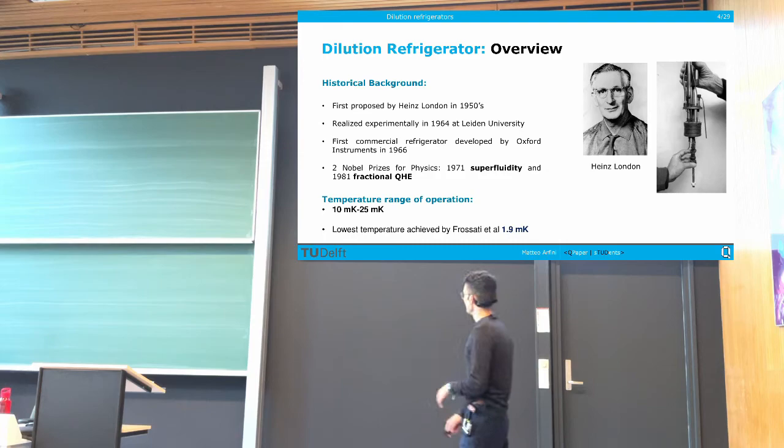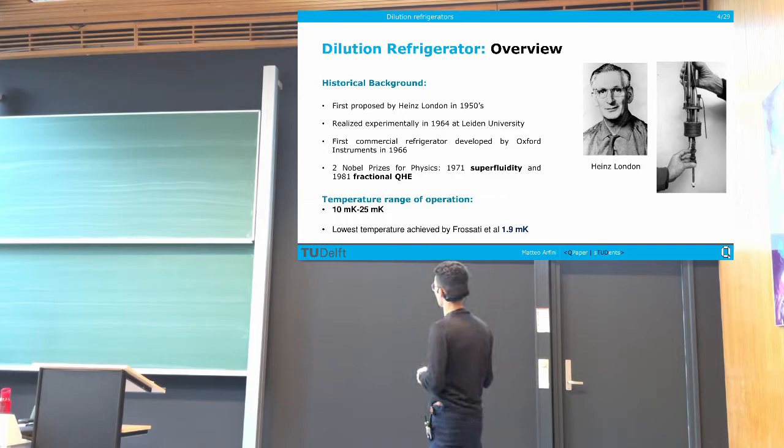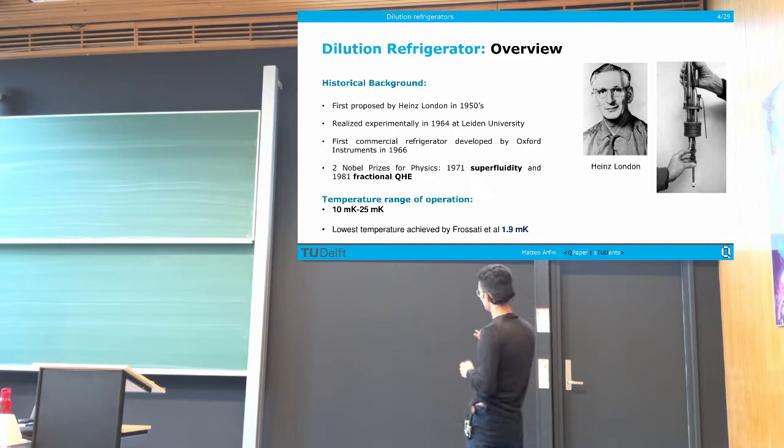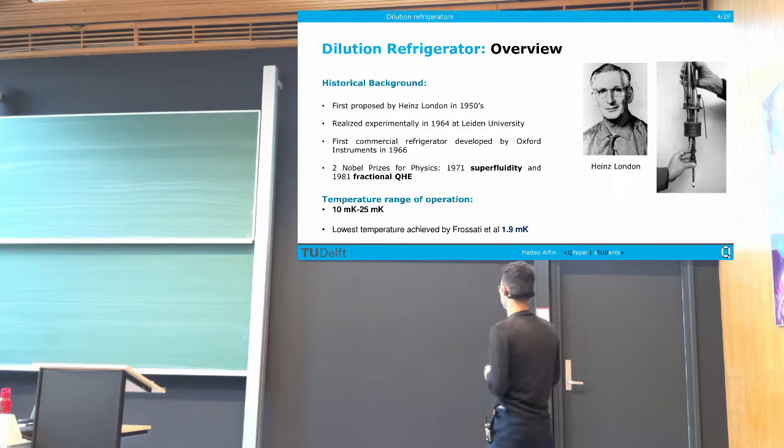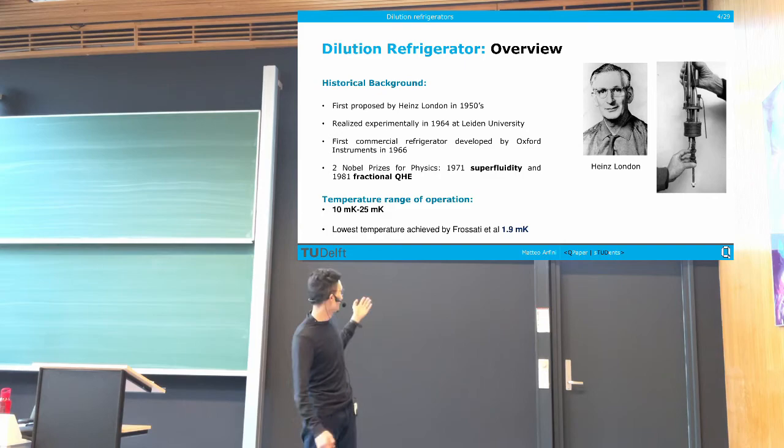What always struck me about this system is the temperature range of operation, which spans between 10 mK and 25 mK. The lowest temperature achieved by dilution refrigerators — especially thanks to a specific kind of technology for heat exchangers, which I'll talk about later — was achieved by Frossati et al. and is around 1.5 mK. So we can get as low as this millikelvin range.